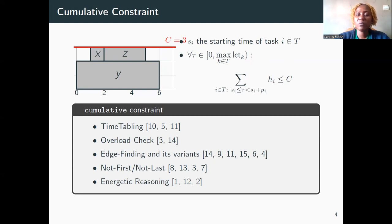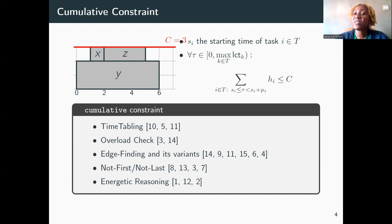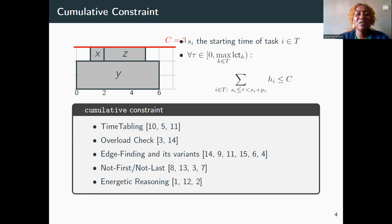Filtering algorithms remove inconsistent values from the starting time variable domains. It is NP-hard to remove all such values. In this paper, we use the profile data structure introduced by Gingras and Kimper in 2016 to enhance the age-finding rule.